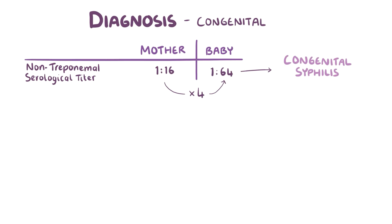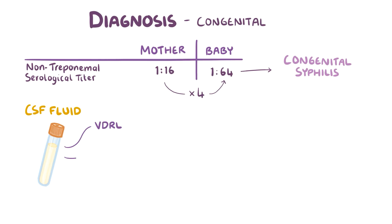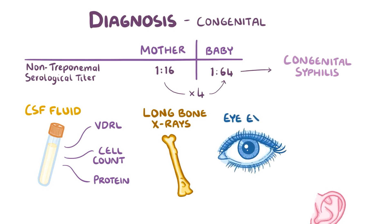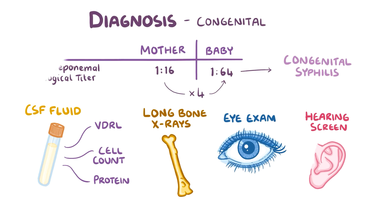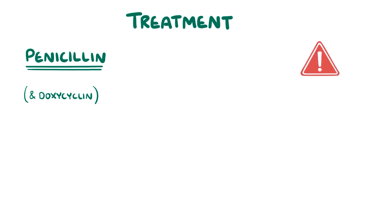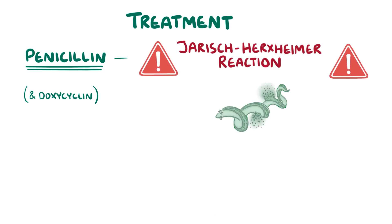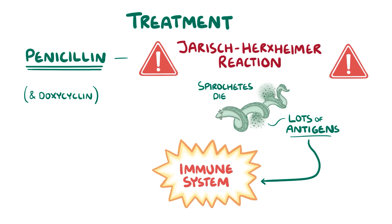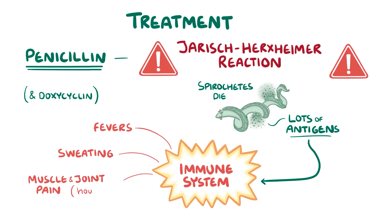In general, for any baby whose mother was inadequately treated for syphilis or is suspected of having congenital syphilis, it's helpful to get CSF fluid for VDRL as well as cell counts and protein. It's also helpful to perform long bone x-rays, as well as an eye exam and a hearing screen. The main treatment for syphilis is penicillin, but in some cases doxycycline can be used as well. When using penicillin, it's important to watch out for a Jarisch-Herxheimer reaction, which is when spirochetes die and break open, releasing a lot of antigens all at once and making the immune system go into overdrive, resulting in sudden fevers, sweating, and muscle and joint pains that may last for a few hours up to a few days.